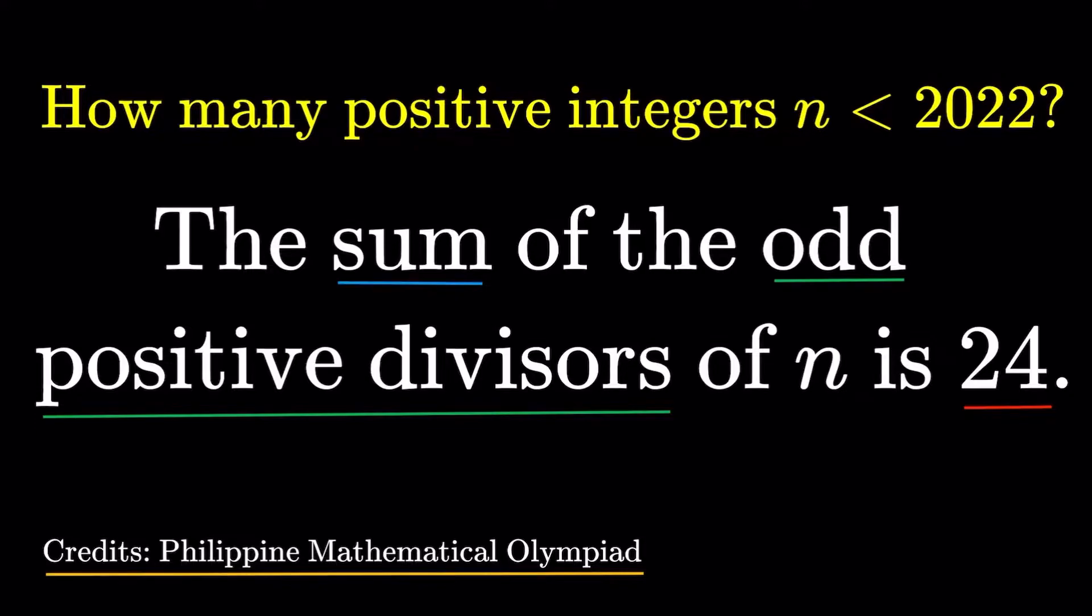For how many positive integers n less than 2022 is the sum of the odd positive divisors of n 24.